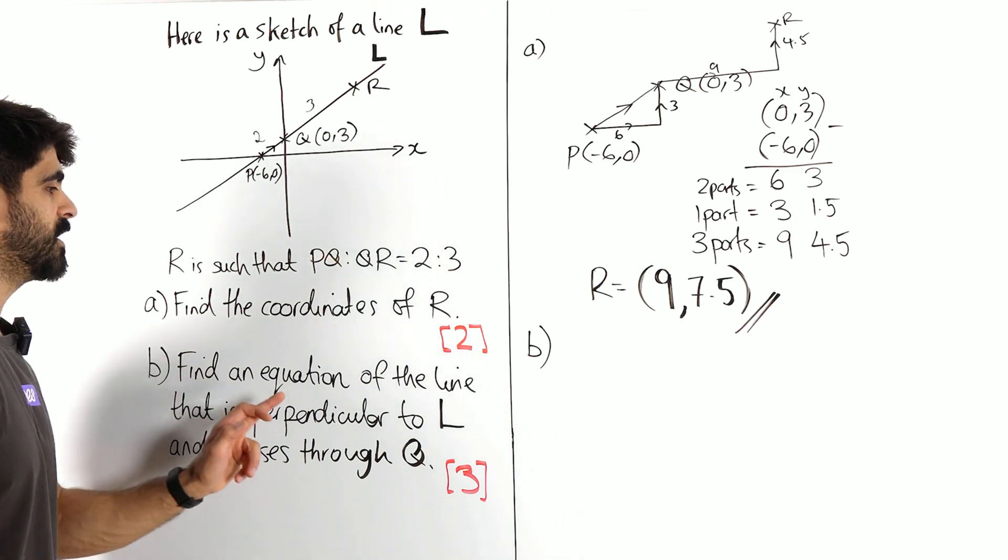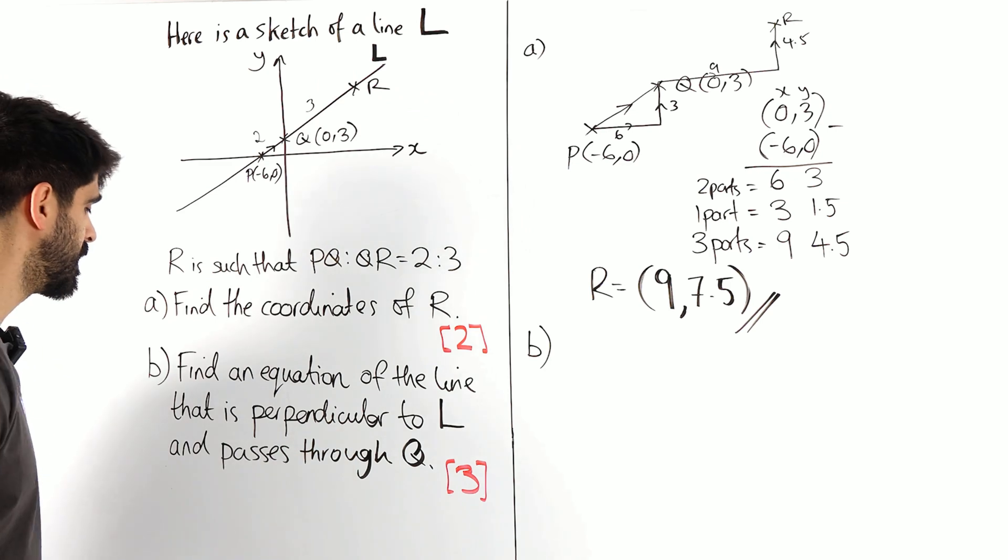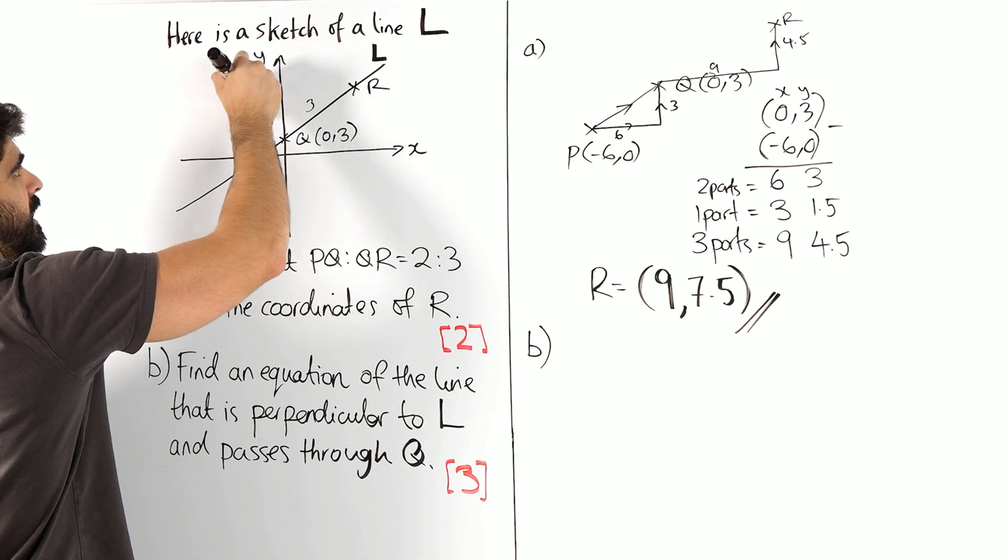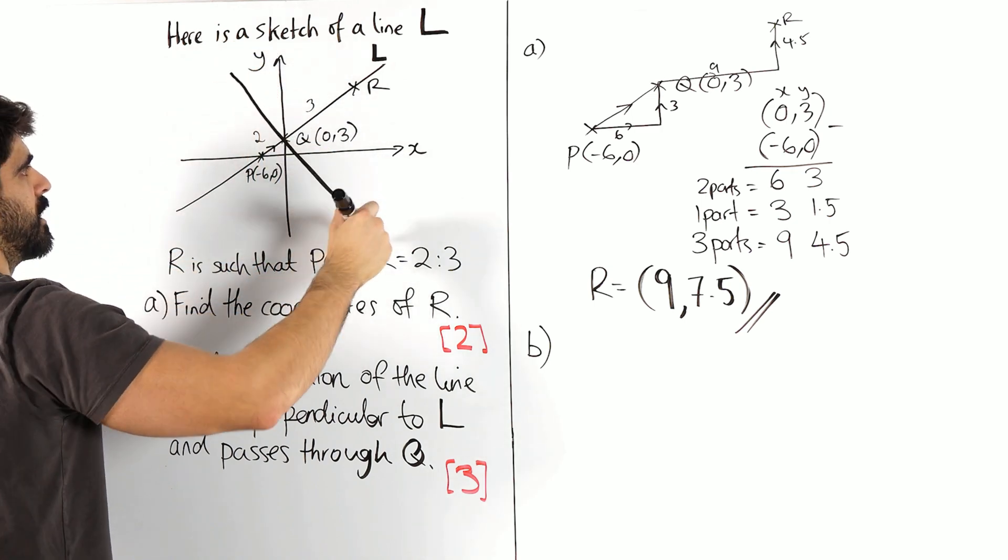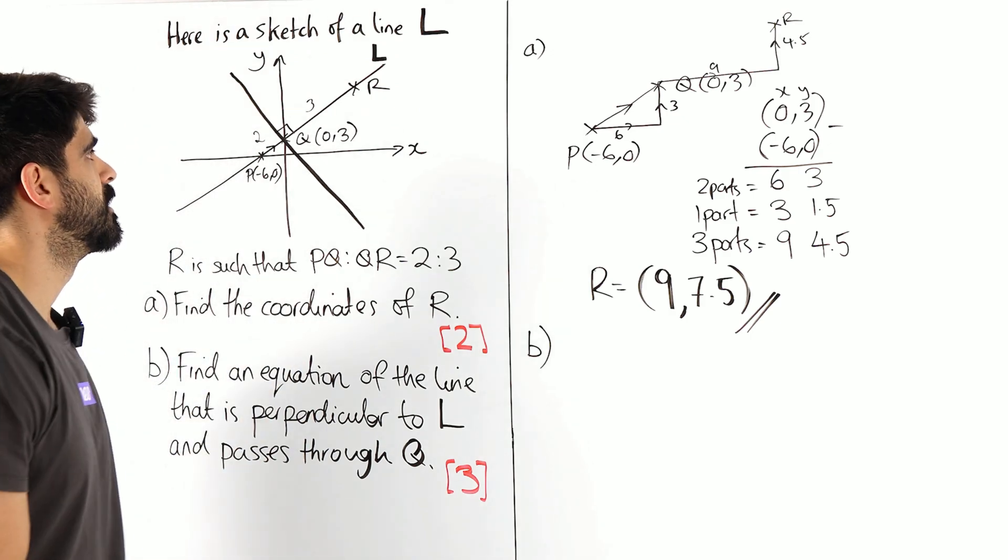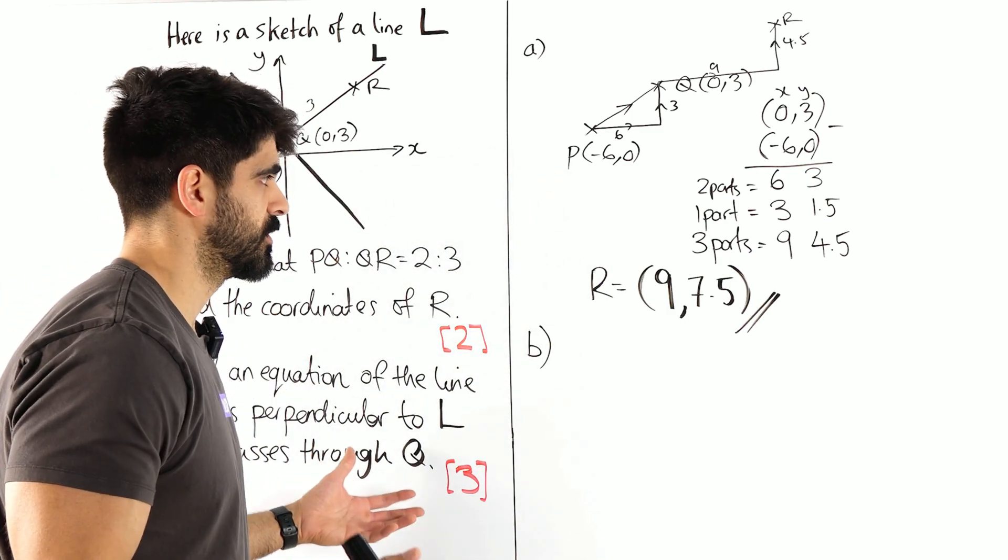Then it says find an equation of the line that is perpendicular to the line L. So perpendicular meaning 90 degrees and passes through Q. So passes through here. So we have a line which is perpendicular meaning 90 degrees going through Q. So 90 degrees and talking about straight lines we're thinking about negative reciprocals.